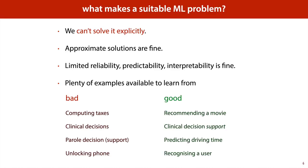So let's zoom out a bit. In general, what makes a suitable ML problem? There are some general guidelines. These are usually problems that we cannot solve explicitly — we don't know the program that solves it. We can live with approximate solutions: even if we cannot perfectly recognize all digits on an envelope all the time, if we do so 99% of the time, we can still take that learning solution and put it into a useful system. Machine learning systems compared to traditional software have limited reliability, predictability, and interpretability, so we should only use them in settings where this is fine. And of course, if we're going to learn, we need to have plenty of examples available.